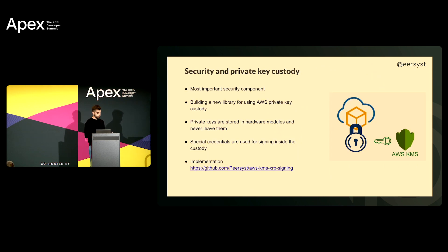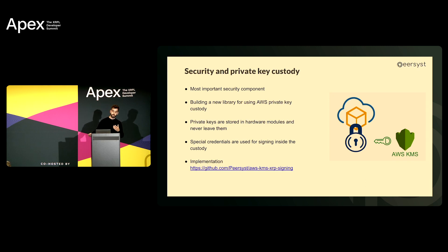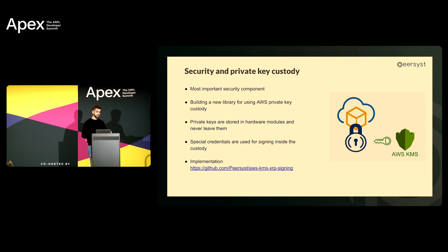Another very important topic is security and private key custody, because there will be a centralized bridge where someone holds a private key. Credit to Sergi Canal, one of our cryptographic engineers who built this module. We are taking advantage of the AWS KMS system. AWS has a hardware security module that allows you to store private keys inside and never have them leave the hardware. Think of it like a Ledger or Trezor but in AWS in the cloud. Through this, we can sign XRP transactions using AWS KMS without ever having the private key on our server, which offers better security.